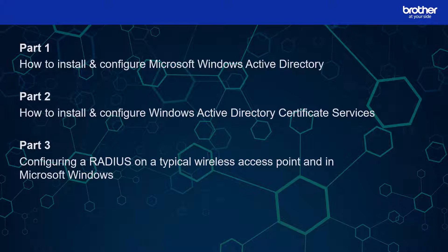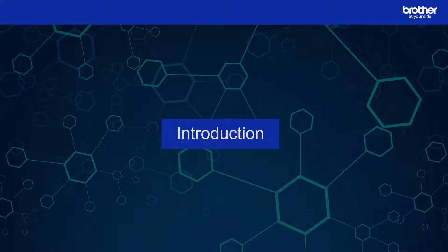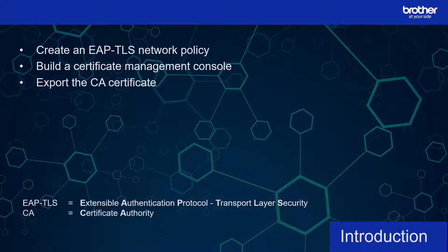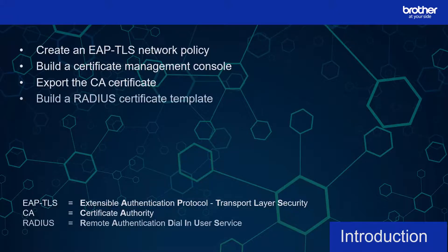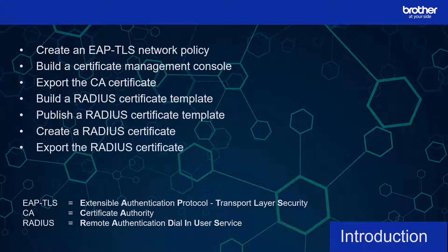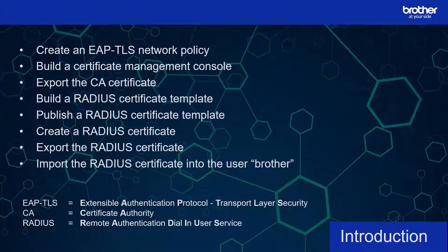Links to them can be found in the description. In this video we will: create an EAP-TLS network policy in Microsoft NPS; build a certificate management console with access to the required certificate stores; export my server's CA certificate; build a RADIUS certificate template; publish the RADIUS certificate template; use it to build a RADIUS authentication certificate for Brother device authentication; export it to upload to my Brother device; and import the RADIUS certificate into my Active Directory user called Brother.